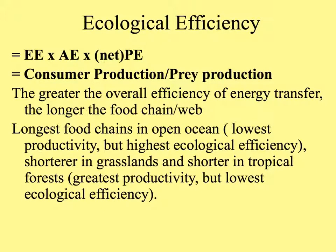Overall ecological efficiency equals consumption efficiency times assimilation efficiency times net production efficiency — in other words, the production of consumers over the production of prey. The greater the overall efficiency of energy transfer, the more trophic levels can be supported and the longer the food chain or web. The longest food chains are found in the open ocean, because even though productivity is low, ecological efficiency is high. In grasslands these are shorter, and shorter still in tropical forests, where there's great productivity but low ecological efficiency.